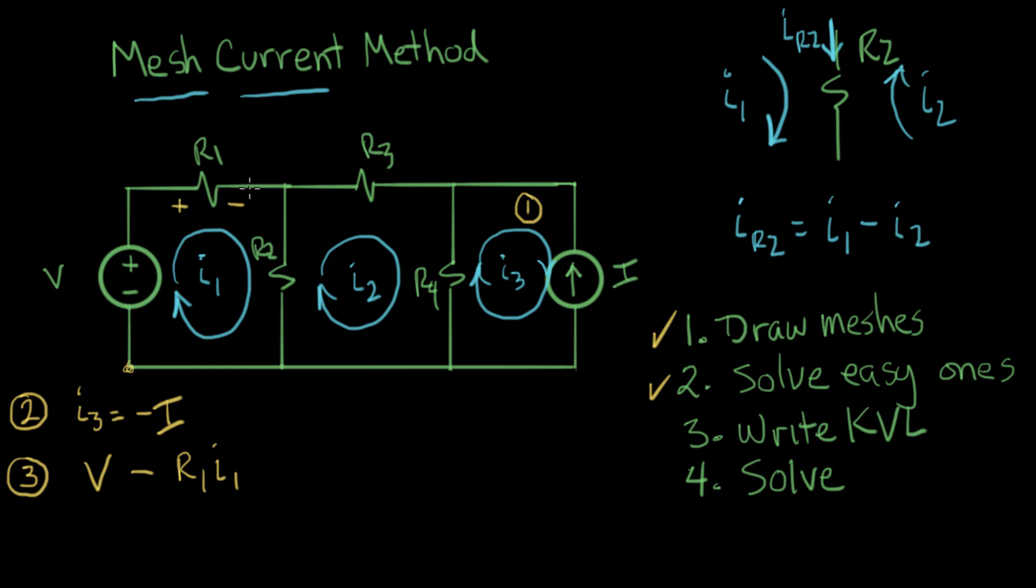Now we are over here, we go around the corner and we go through R2. Now R2 is odd because it has I1 and I2 flowing into it. So what are we going to do? Well, we already figured out that this element current is written down right over here, there it is right there.